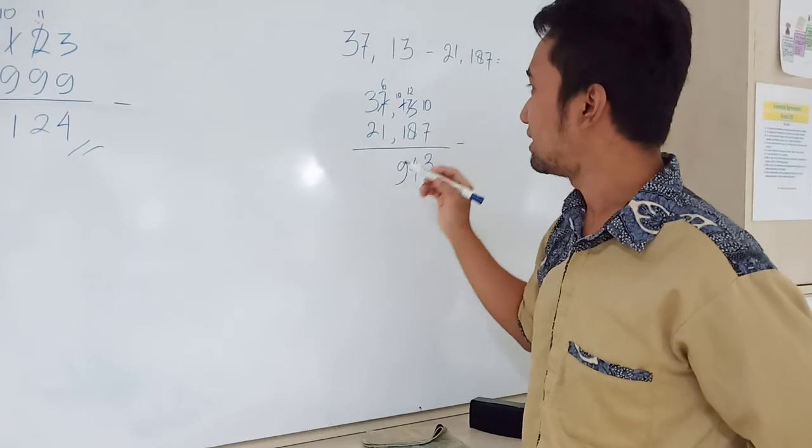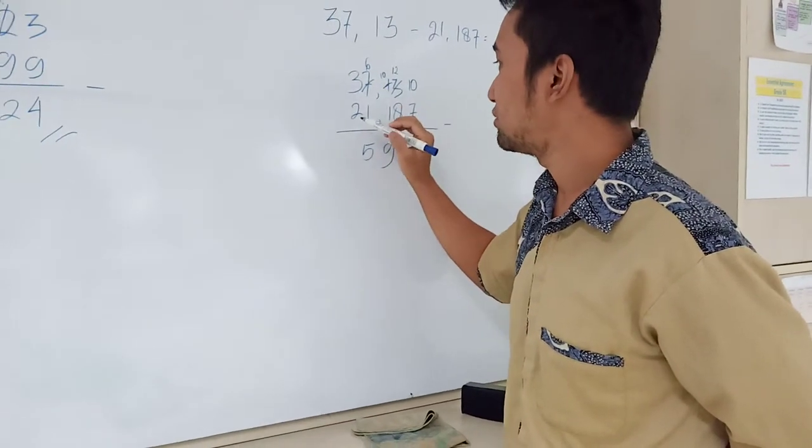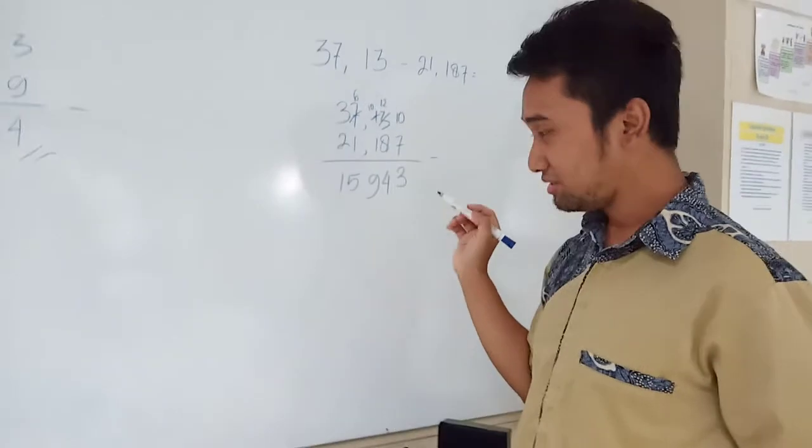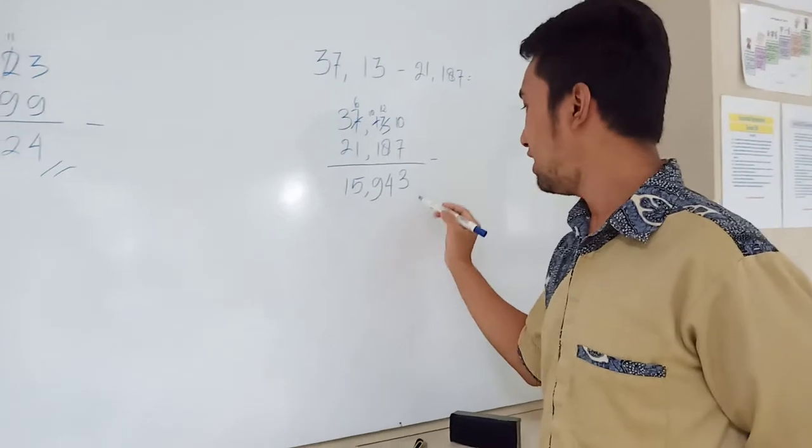Now 6 minus 1 is 5. 3 minus 2 is 1. This one in the comma is here. Because we are in the same position as one. Done.